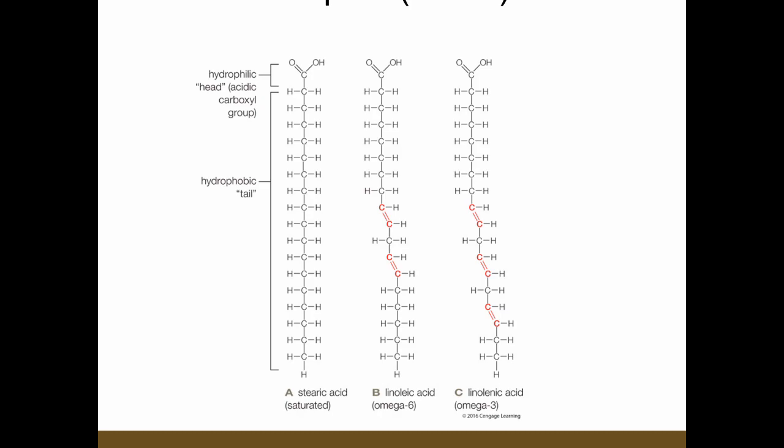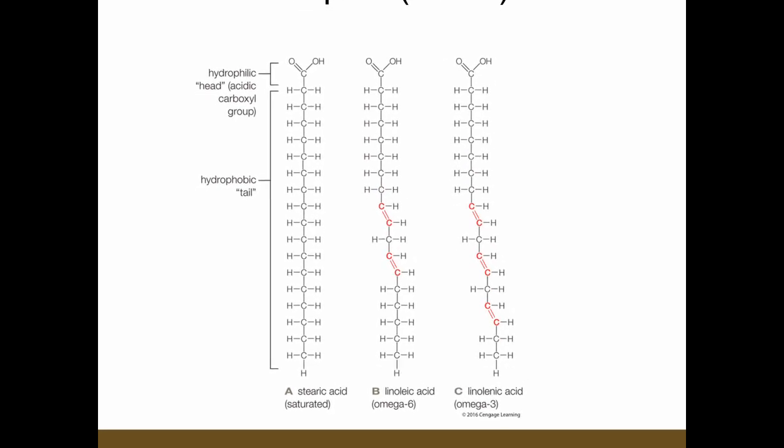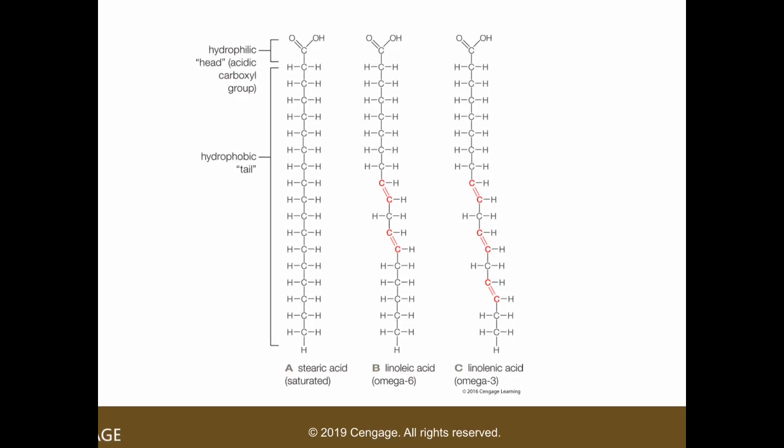In contrast, we have trans fats. Trans fats are unsaturated — they have double bonds — however, their structure is similar to saturated fatty acids. Instead of the double bond causing a kink or a bend, the chain remains straight even though it contains double bonds. That is why trans fats are considered unhealthy — they are the bad cholesterol in foods, because they tend to solidify easily and clog your veins and arteries.